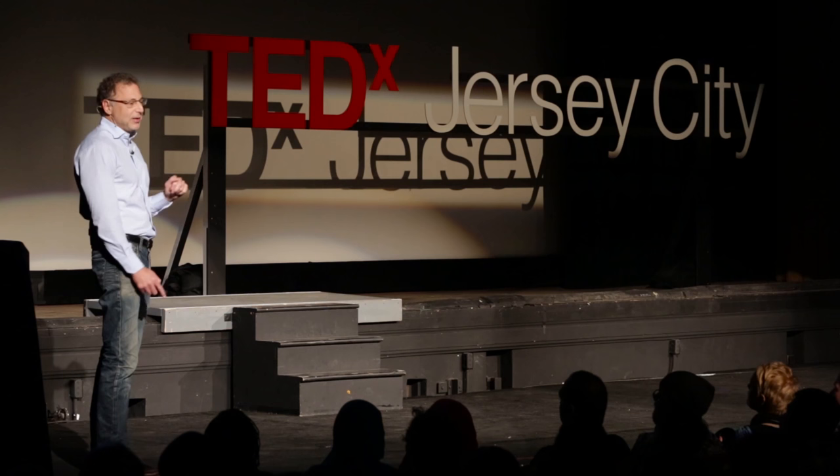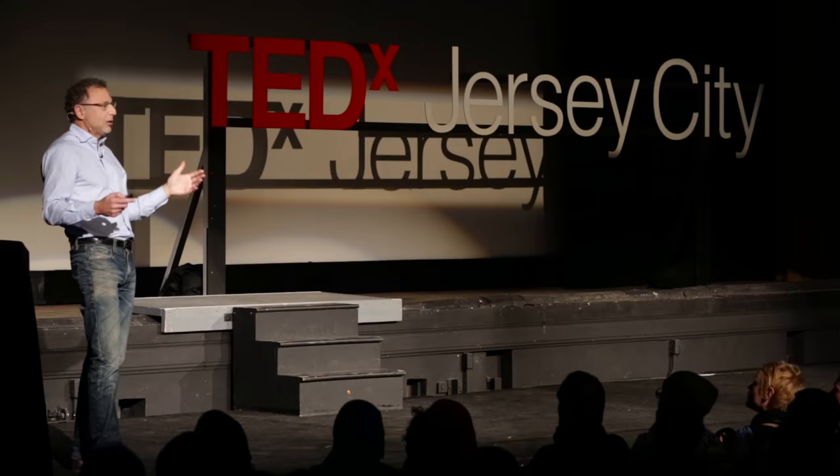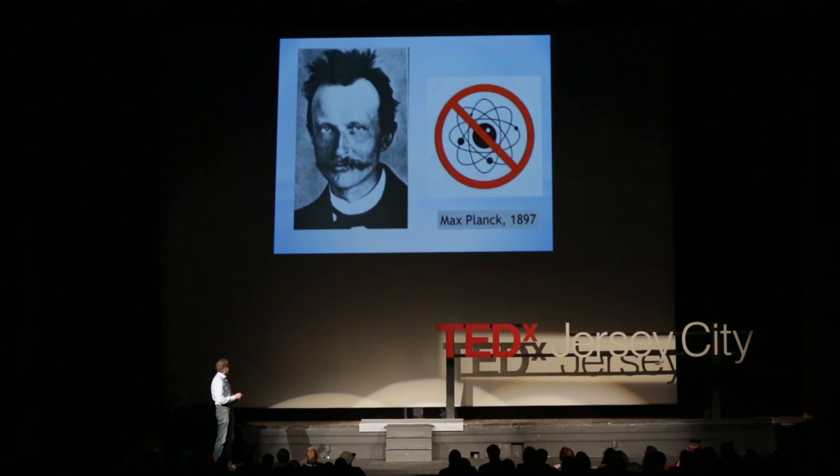And when physicists in the late 19th century tried to make physical models and apply Newton's laws and the laws of electromagnetic waves to figure out how this happens, to derive these curves, they couldn't do it. They got the wrong answer. They got a totally absurd, ridiculous result. So nobody knew why materials behave like this. So that was a big puzzle at the end of the 19th century.